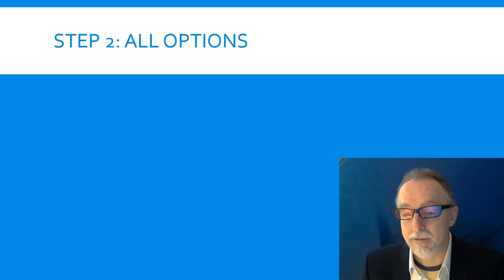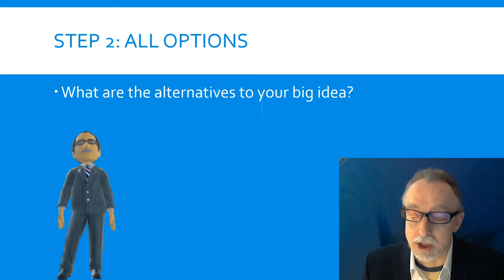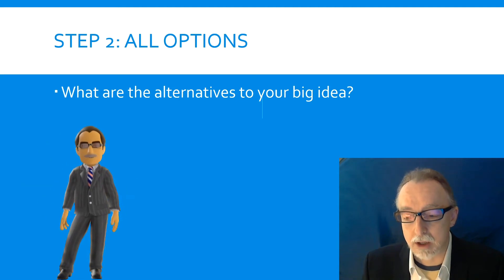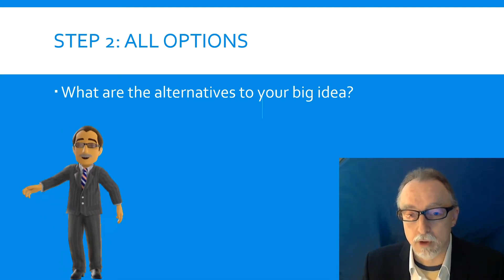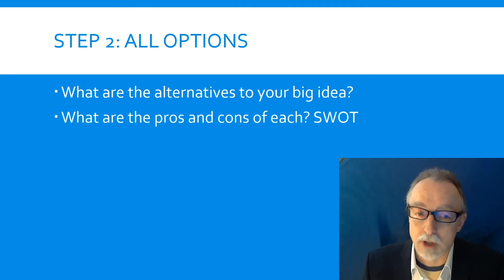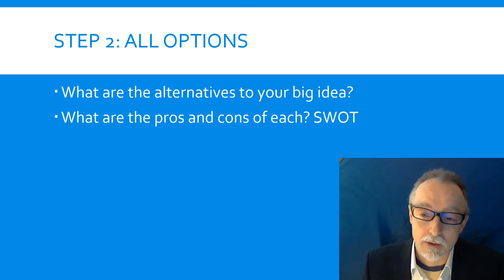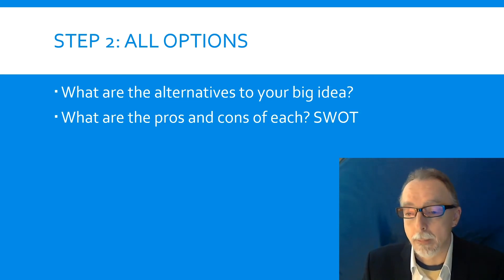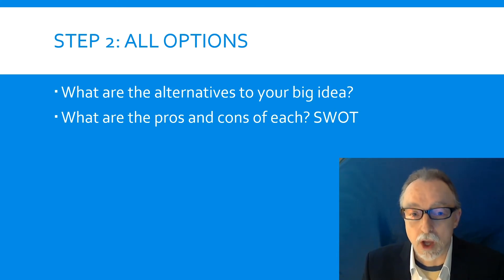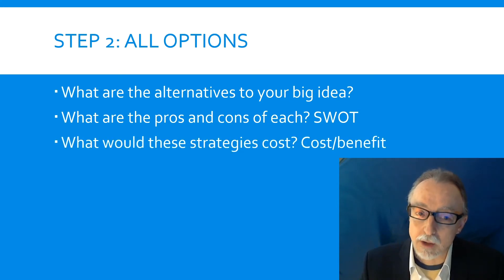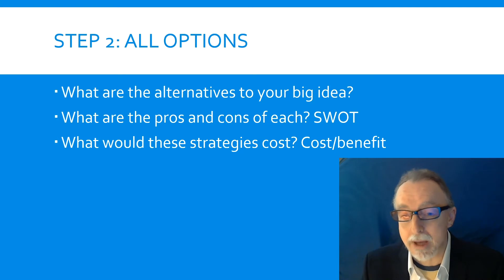Step two: you have to, in fairness, look at all the options. In other words, what are the alternatives to your big idea? You do that to show that you have taken an overall view and that you are fully aware of what is available. And in conclusion, having looked at the pros and cons of each of the alternatives, your big idea is the best one. How do you do an analysis of pros and cons? Well, there is what you know as a SWOT analysis — very well understood. Broadly, you look at the strengths, the weaknesses, the opportunities, and the threats of those alternatives. You've also got to look at what those strategies would cost, and the benefit when measured against that cost.